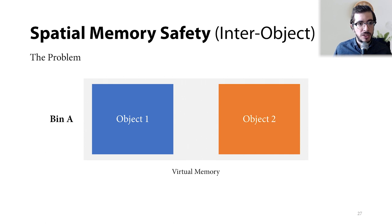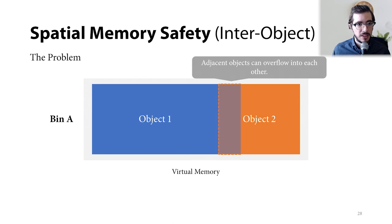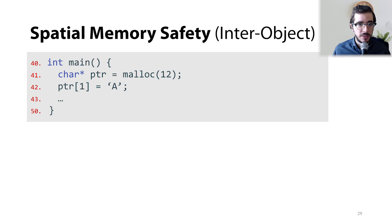Now, let's start with a simple security problem, inter-object spatial memory safety. In this case, adjacent objects can overflow into each other, resulting in information leakage, memory corruption, or even control flow hijacking. And the question is, how can NOFAT detect this? Let's explain this further by going back to our example.